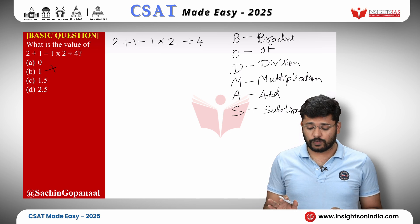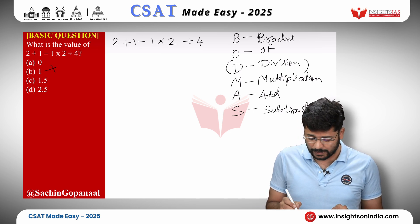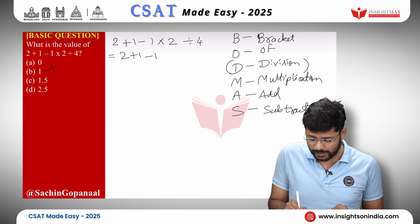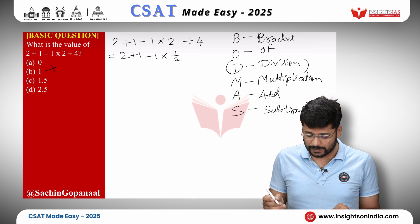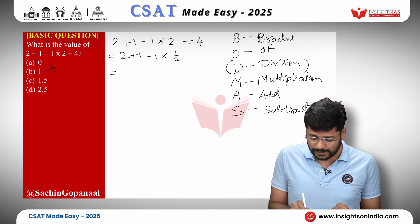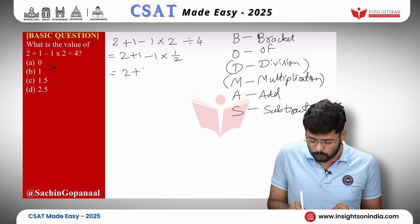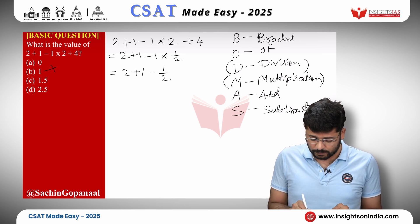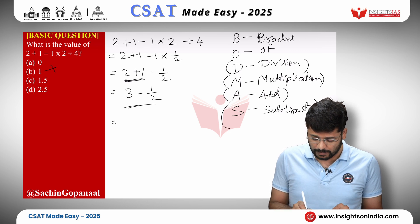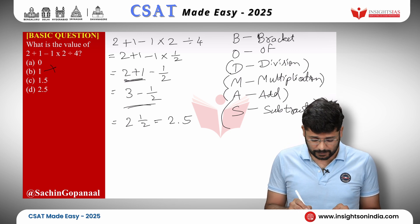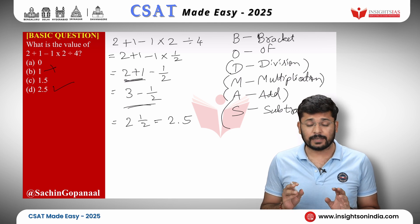There are no brackets or 'Of' here, so the first operation is division. 2 divided by 4 gives 0.5. Then multiplication: 1 into 0.5 gives minus 0.5. Then addition: 2 plus 1 gives 3 minus 0.5. Finally subtraction: 3 minus 0.5 is 2.5. The answer is option D — 2.5. This teaches us BODMAS.